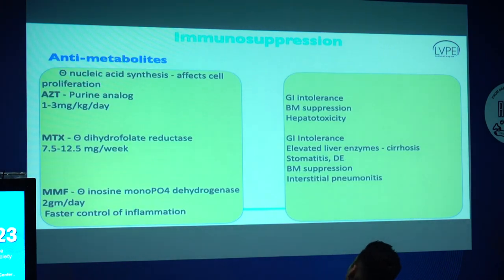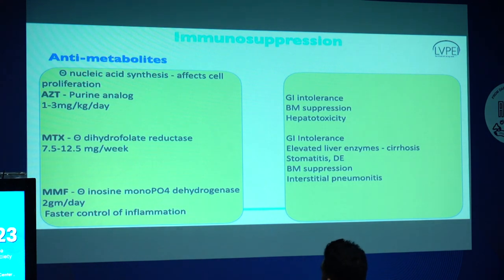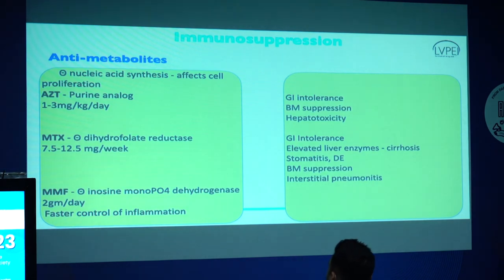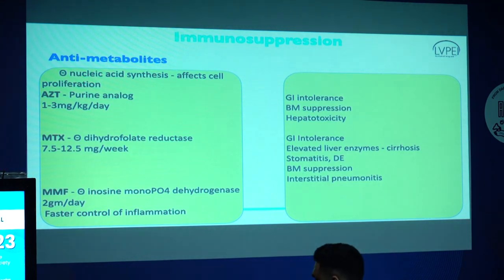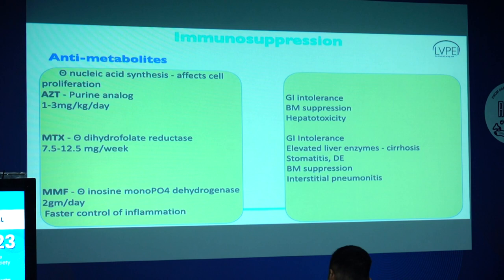The other drugs we use are antimetabolites, which inhibit nucleic acid synthesis and affect cell proliferation. These include AZA for azathioprine, MTX for methotrexate, and MMF which is mycophenolate mofetil. These drugs help bring down inflammation. They do tend to have GI intolerance, bone marrow suppression, and hepatotoxicity, so it's important to investigate them at regular intervals — initially weekly, then monthly on a regular basis.